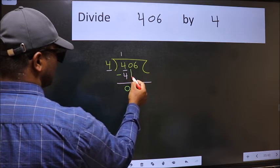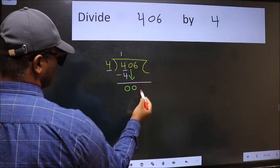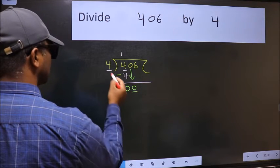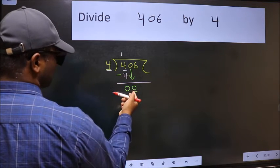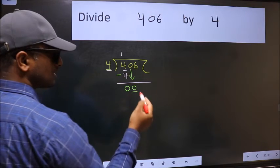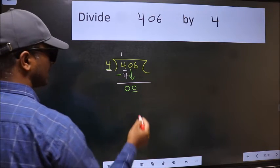After this, bring down the beside number. So 0 down. Now here we have 0 and here 4. 0 is smaller than 4, so we should bring down the second number.